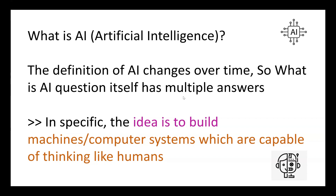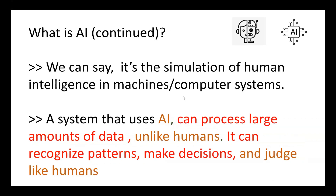The idea is to build machines or computer systems which are capable of thinking like humans. We can also say it's the simulation of human intelligence in machines or computer systems. A system that uses AI can process large amounts of data; unlike humans, it can recognize patterns, make decisions, and judge like humans.